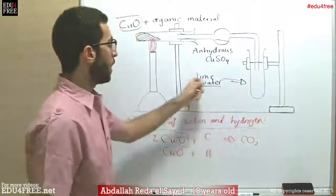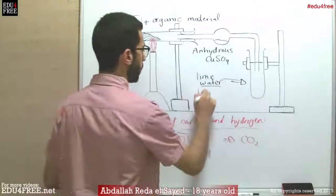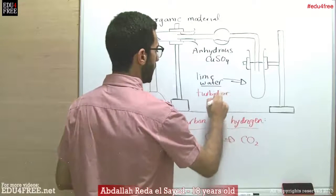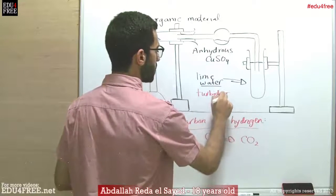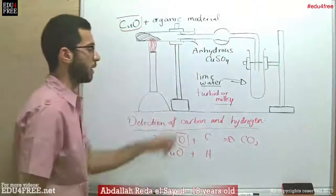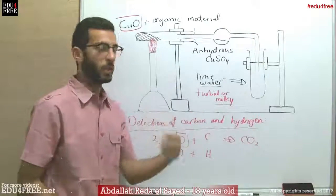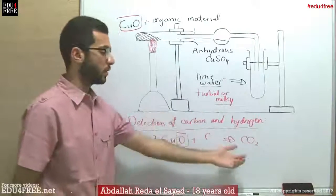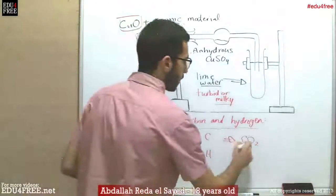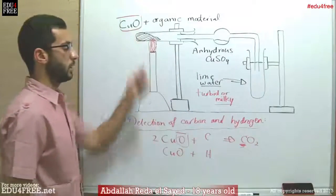Of course, the lime water, instead of being clear, will become turbid or milky. This is the effect of carbon dioxide on lime water. So when it becomes turbid or milky, we know that carbon dioxide is present — or in other words, carbon is present in the organic material.